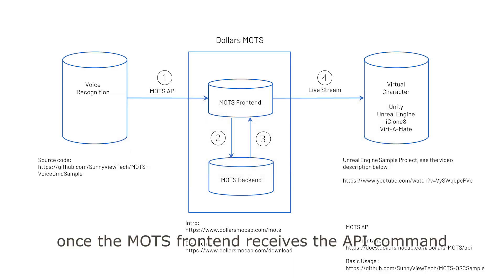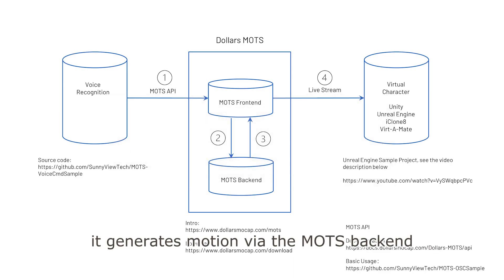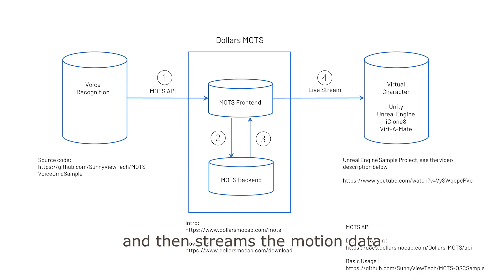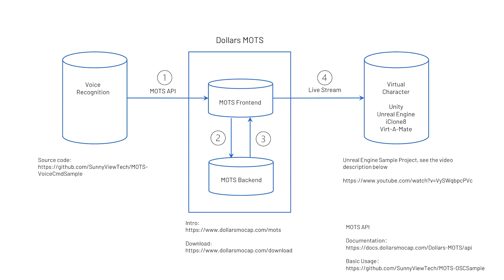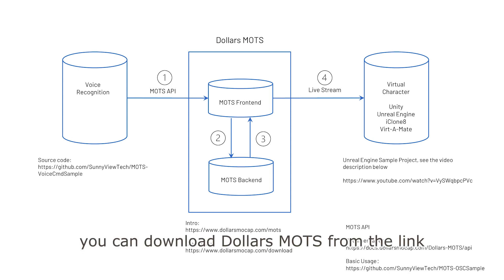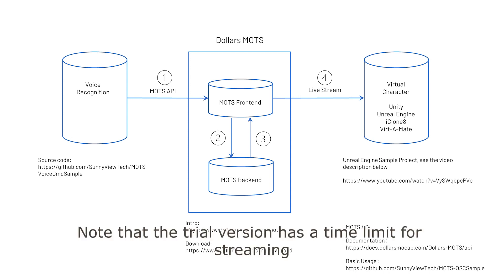Once the Moe's frontend receives the API command, it generates motion via the Moe's back-end and then streams the motion data to the virtual character program in real time. You can download Dollars Moe's from the link. Note that the trial version has a time limit for streaming.